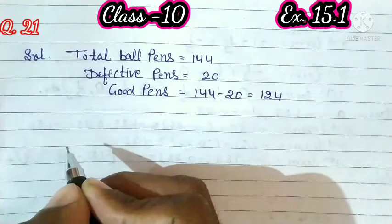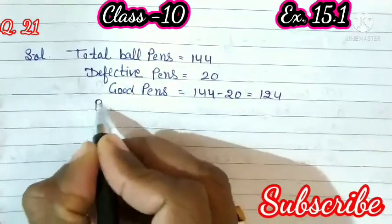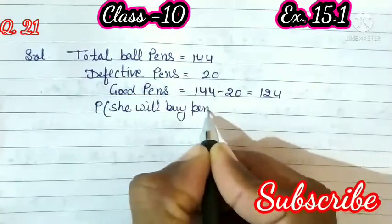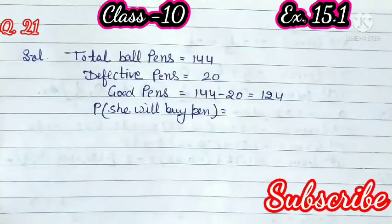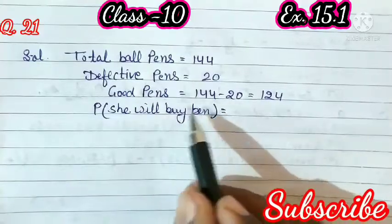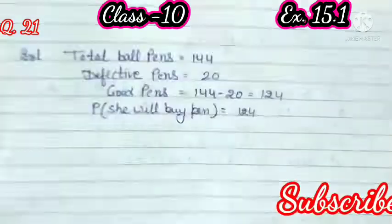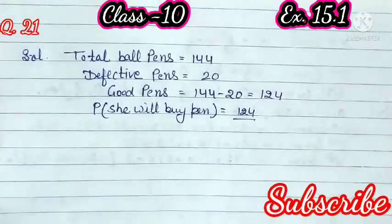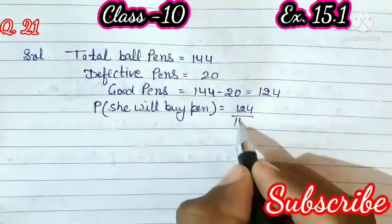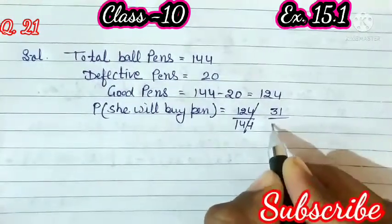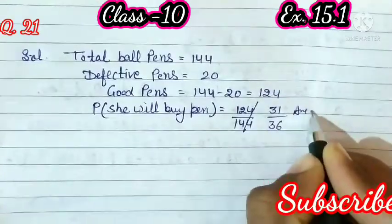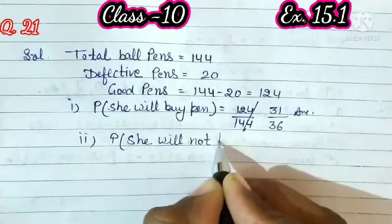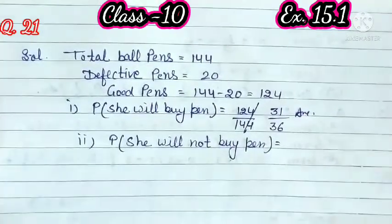First part: what is the probability that she will buy it? Probability she will buy pen = probability of good pen. Favorable outcomes for good pen = 124, upon total number of possible outcomes = 144. Simplifying: 124/144 = 31/36.